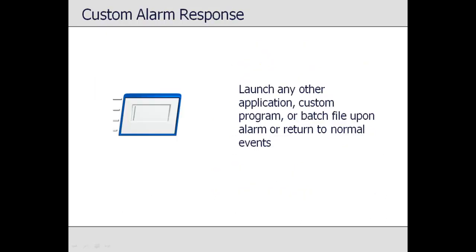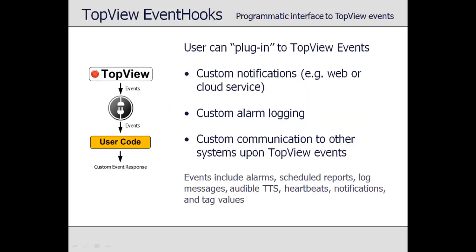Some users need to deliver notifications through methods not supported in Top View, or would like to trigger another action upon events. The custom alarm response and event hooks allow users to customize Top View event response. The custom alarm response instructs Top View to launch other applications or scripts when specific alarms or return-to-normal events occur. Event hooks allow users to write .NET plugins to the Top View engine, where events are delivered to the plugin so the user can control the desired response. Uses of event hooks may include custom notifications, custom logging, and communication to external devices and systems.